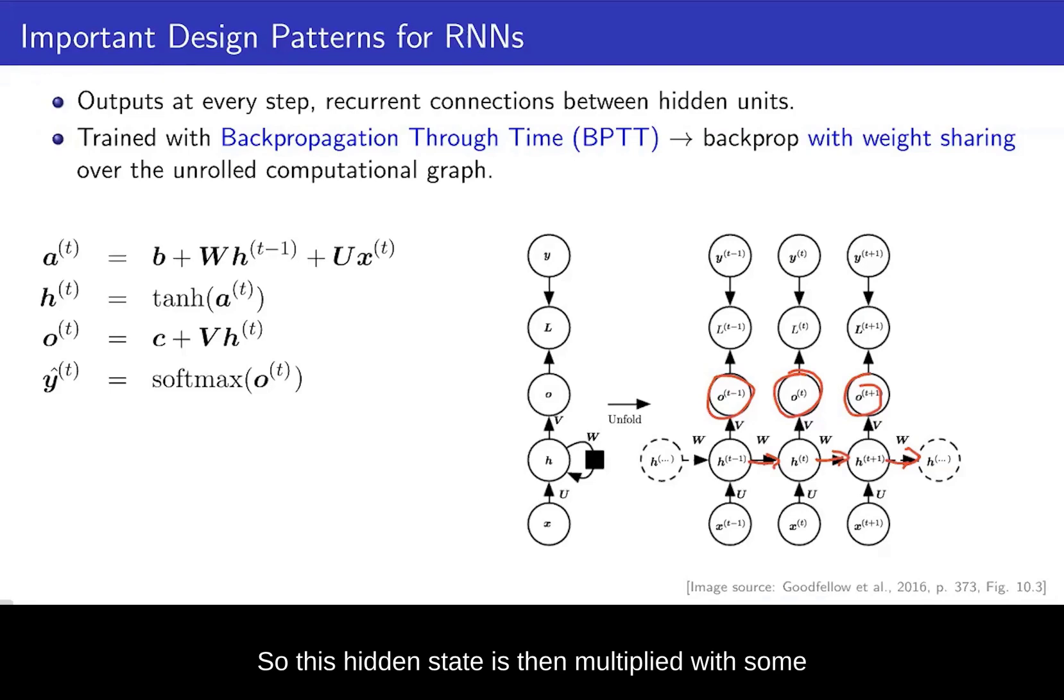This hidden state is then multiplied with some output weights V and its own bias term C to yield the output O in time step T. Finally, we apply our softmax function to get the prediction y hat as you see here in the output. This is then trained with backpropagation through time. So we have these shared weights over different time steps.